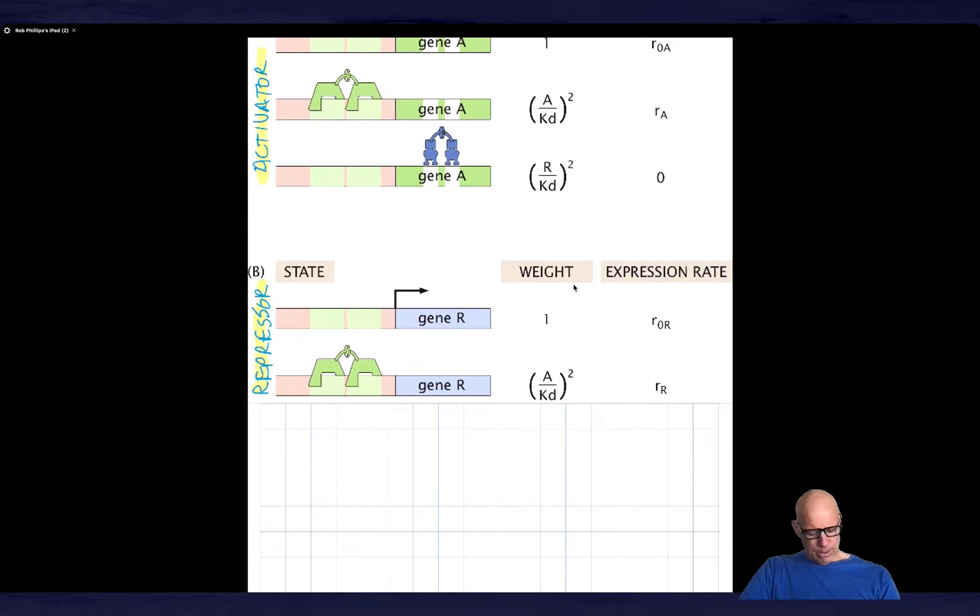Notice that the statistical weight of this is R squared, which tells us about the repressor gene binding to the activator gene. Now down here, this is the states and weights for the repressor gene. And what you see is that the repressor gene is ramped up to a rate R sub R in the presence of the activator, which you see down here.